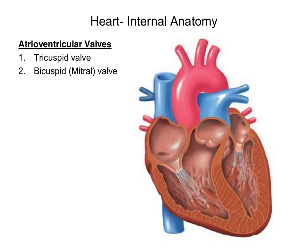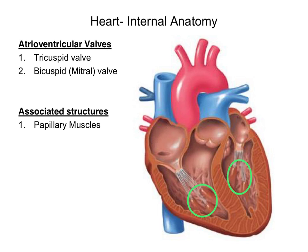Students always ask how to remember the difference between the tricuspid and the bicuspid valve, other than that the tricuspid valve has three flaps and the bicuspid valve has two flaps. How do you remember which side each valve is on? The way I tell students is that tricuspid, TRI, has the letters RI in it, which means that it is on the right side. And by default, the bicuspid valve would be on the left. In a previous lecture, we talked about a couple of structures associated with atrioventricular valves: papillary muscles, which extend from the walls of the ventricles, and chordae tendineae, or the heartstrings.